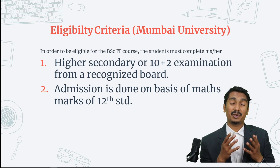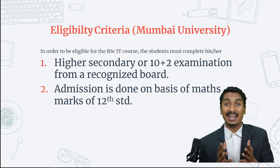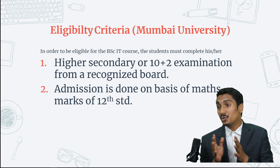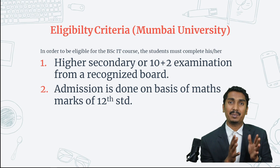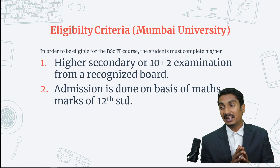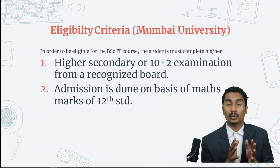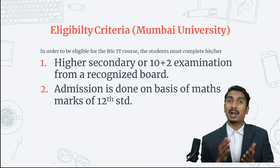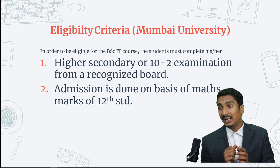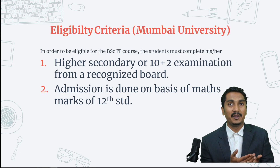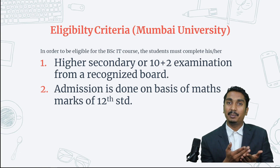If you are thinking about BSCIT or Computer Science, the eligibility criteria requires completion of Higher Secondary — that is 12th standard. Admission is done on the basis of marks obtained in Mathematics in 12th standard. You can also apply if you have completed a diploma in your first and second year, after which you can directly enter BSCIT.